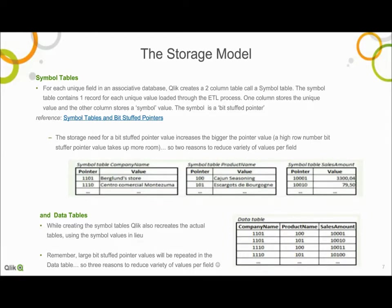A bit-stuffed pointer value is represented as a string of ones or zeros. The storage space an individual value needs depends on the length of the actual pointer value — the first bit-stuffed pointers that appear in a symbol table represent relatively light storage, while later ones, particularly as we get into millions of unique values within a field, represent proportionally larger values. These bit-stuffed pointer values are also referenced in the data tables, which are the second way Qlik stores data. For each table of data in your application, Qlik creates a data table that replaces all real data values with bit-stuffed pointer value equivalents.